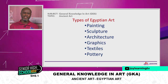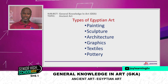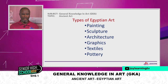Now what are the types of Egyptian arts? In this lesson we are going to discuss these areas: Egyptian painting, sculpture, architecture, graphics, textiles, and of course poetry. We are going to take them one by one and go into a little detail. I know there will be further reading after these lessons, but I am going to give you the very basic ideas that you need to be able to pass your exams.